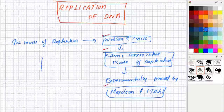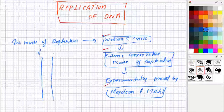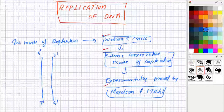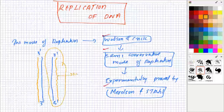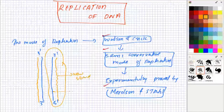I will be describing it briefly. If this is the DNA strand — 5' to 3' on one side, and 3' to 5' on the other — the two complementary strands are there, and new strands will be synthesized complementary to each old strand. So here, one DNA strand will have one new strand, and the other side will have an old strand. That is why it is known as semi-conservative: one old strand and one new strand.